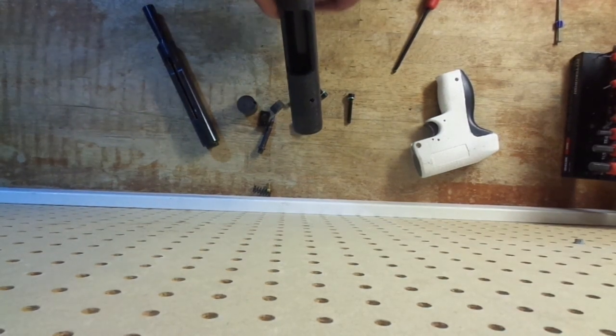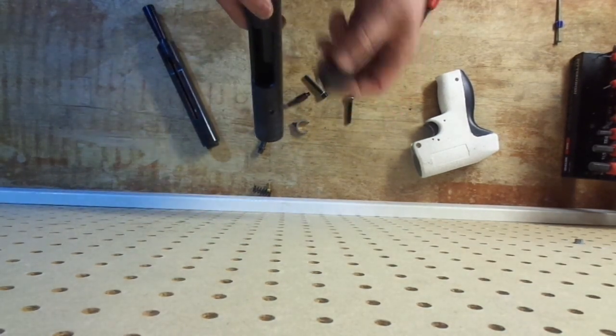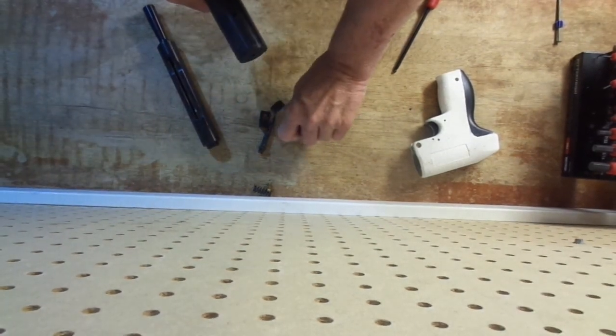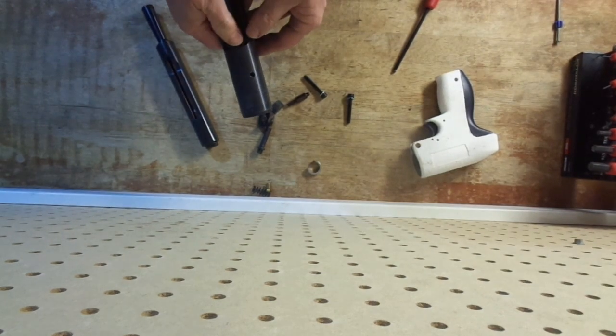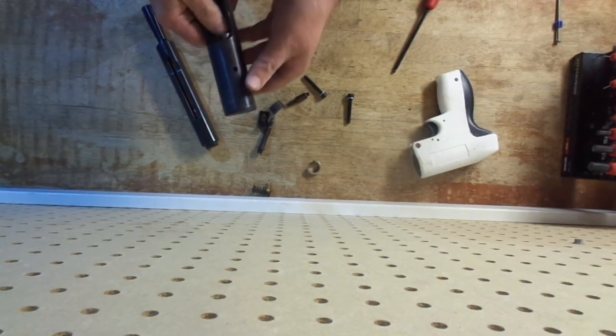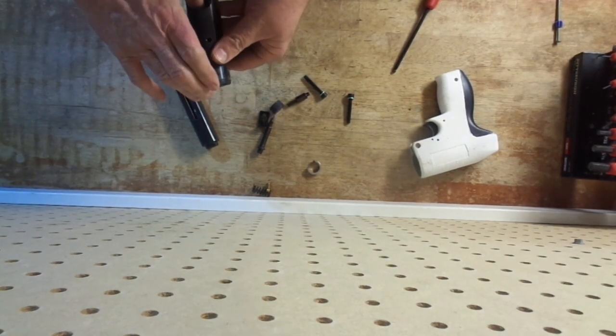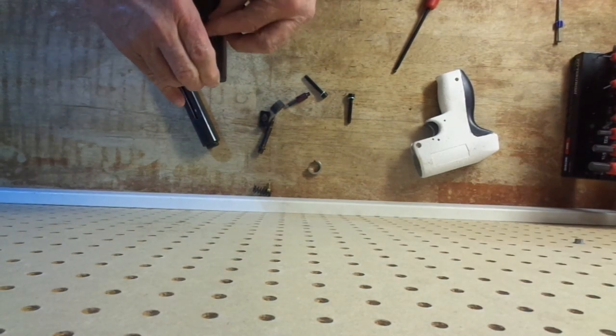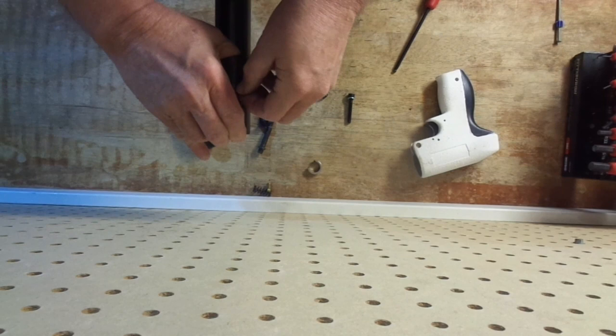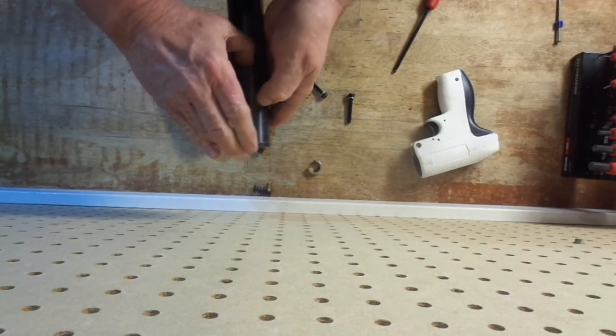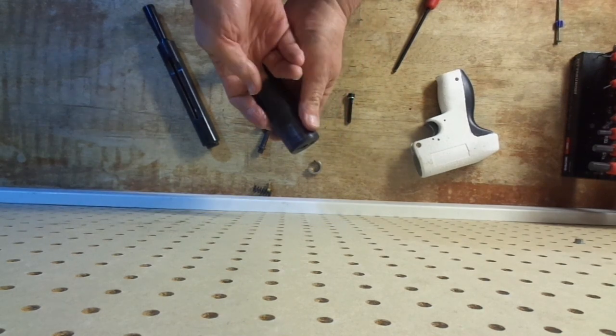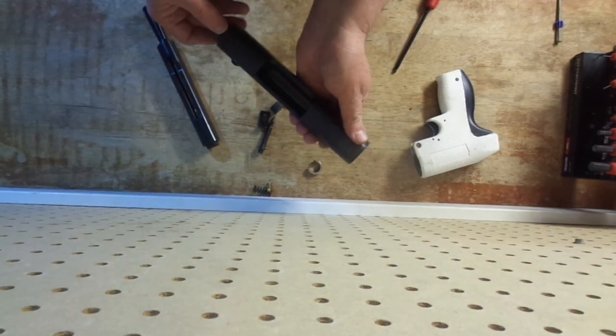So, to put it back together, we'll drop the spring in. Then the block. Line the groove up here. With the keeper pin. Obviously, I didn't have it aligned. Let's try that again.